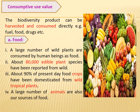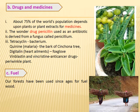The first and foremost value of biodiversity is consumptive use value. It is the biodiversity product which has been harvested and consumed by human beings directly. Examples include food, fuel, and drugs. About 80,000 edible plant species are reported from forests, and 90% of crop varieties are domesticated from wild tropical forests. A large number of animals are also our source of food. The second consumptive value is drugs and medicine — about 75% of the world's population depends upon plant extracts for medicines.